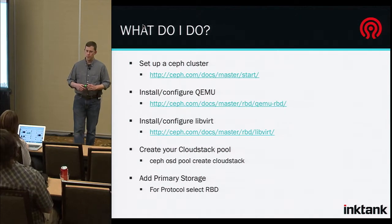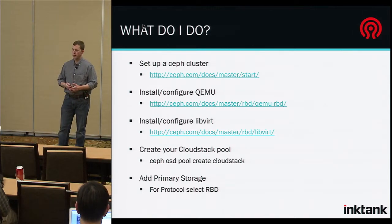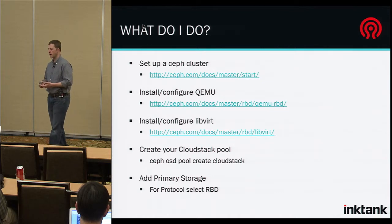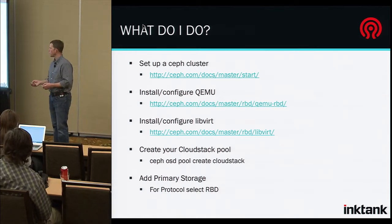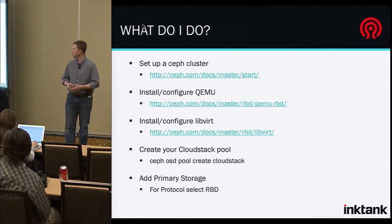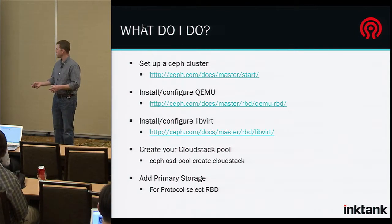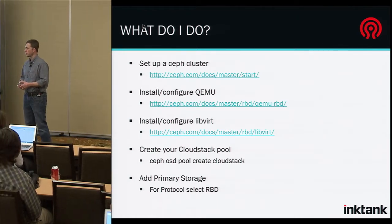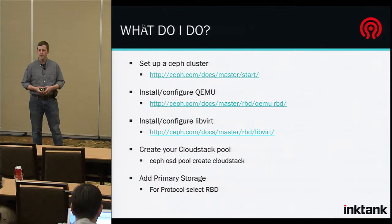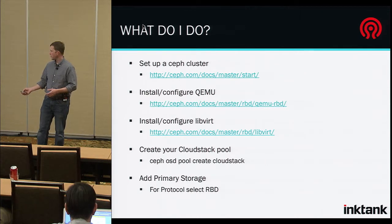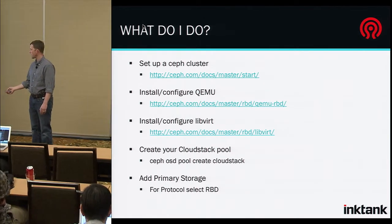So what do you do? First step is you have to set up your Ceph cluster — there's a quick start guide that'll walk you through downloading the software, setting up your monitors, setting up your OSDs. Then, once you've got that up and running, install and set up your QEMU and libvirt. Then, on Ceph, create your pool that you're going to use for your CloudStack storage — this is just a Ceph command: ceph osd pool create cloudstack. It's that simple. Then, just like you would with any other primary storage, go to your CloudStack administrator GUI, add primary storage, and for your protocol, select RBD.